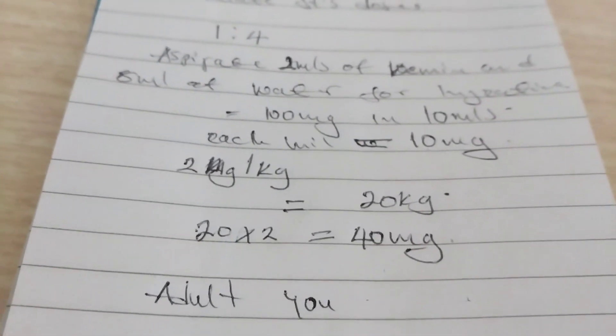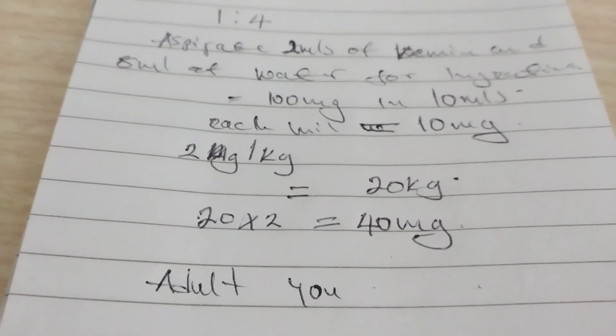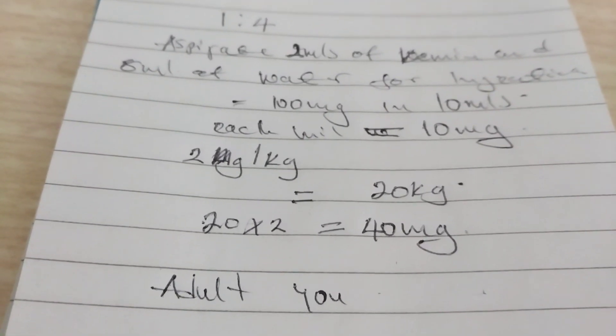If someone has 20kg, we multiply 20 times 2, which brings us to 40mg that we will give to that person.